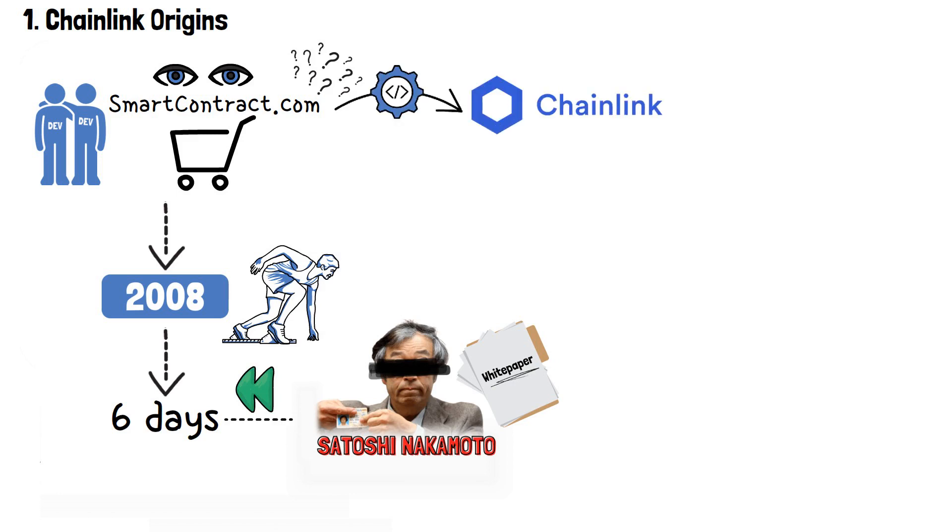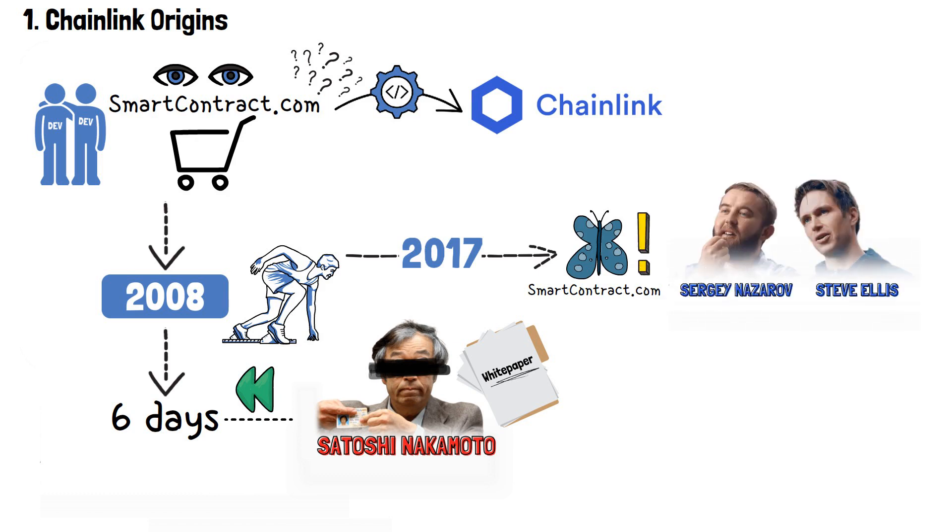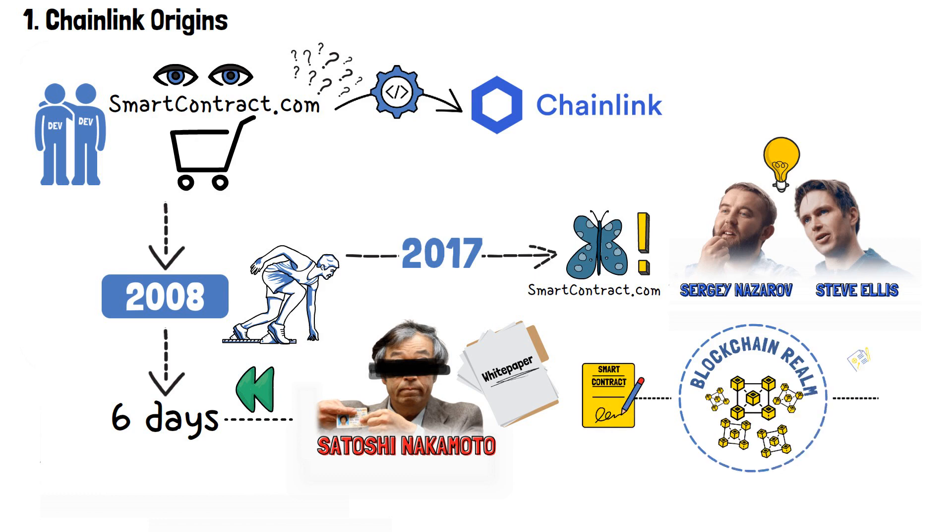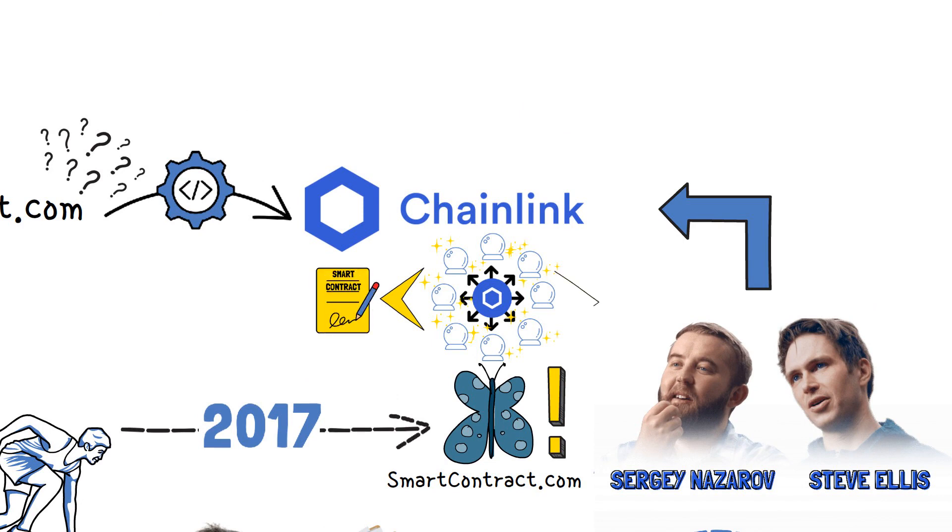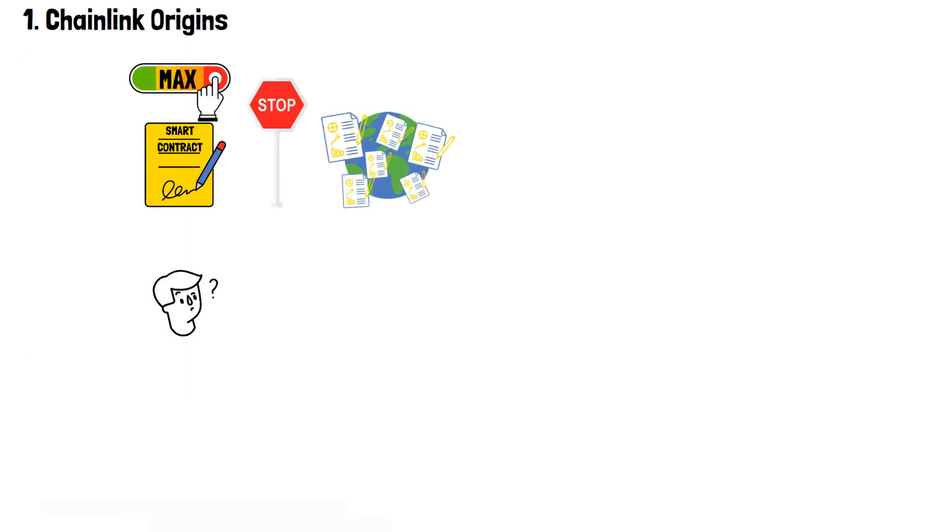But when did it transform to Chainlink? Fast forward to 2017, and the evolution of smartcontract.com reached a pivotal moment. The founders, Sergey and Steve, realized a critical need within the blockchain realm. The demand for a bridge between smart contracts and external data sources. This realization led to the birth of Chainlink, a decentralized oracle network that aimed to connect the digital realm of smart contracts with the tangible world of real-world data. It became pretty evident that while smart contracts held immense promise, they were limited by their isolation from real-world data.